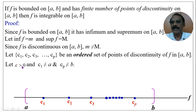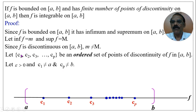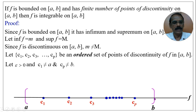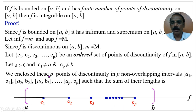Let epsilon be greater than 0, however small. Note that c1 is not equal to a and cp is not equal to b. The reason is that c1 is the first point of discontinuity — we cannot start the interval with a point of discontinuity. Similarly, the endpoint b cannot equal cp. Therefore c1 ≠ a and cp ≠ b. We enclose these points of discontinuity.